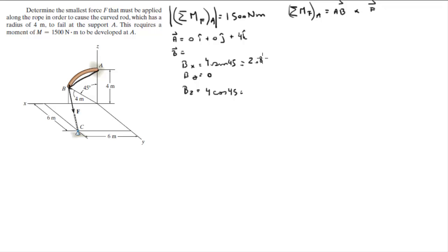And it comes out to be 2.83. So this comes out to be 2.83i plus 0j plus 2.83k.